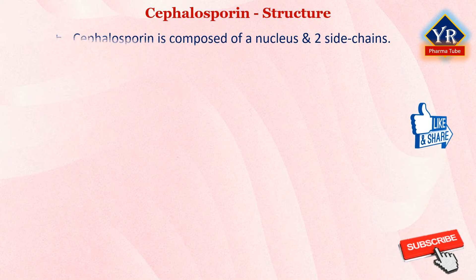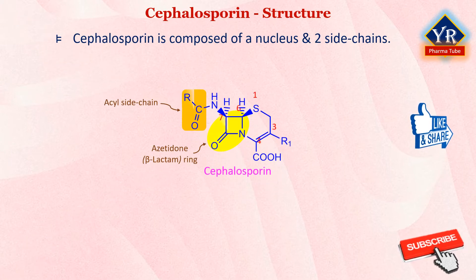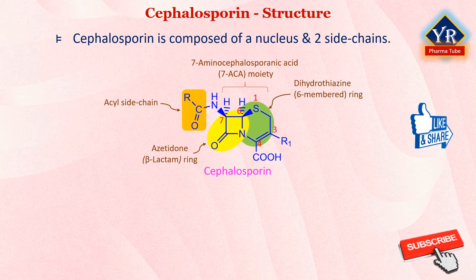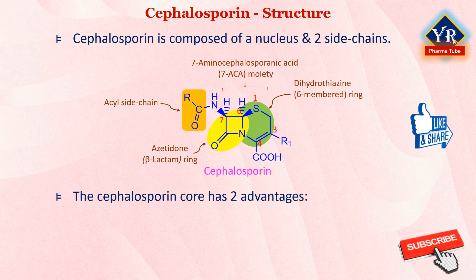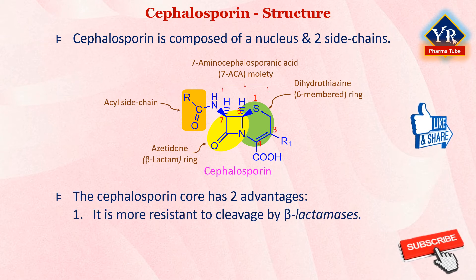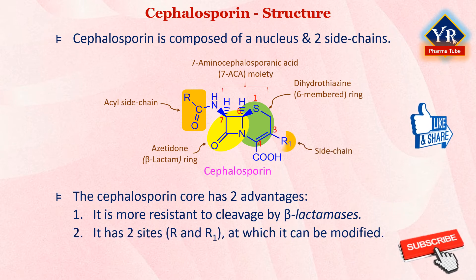Cephalosporin is composed of a nucleus with two side chains. The nucleus is 7-aminocephalosporanic acid, which is similar to the nucleus of penicillin except that the beta-lactam ring is fused to a 6-membered dihydrothiazine ring instead of a 5-membered thiazolidine ring. The cephalosporin core has two major advantages over the penicillin core: it is intrinsically more resistant to cleavage by beta-lactamases, and it has two variable sites, substituents R1 and R2, at which it can be modified. This in part explains the large number of cephalosporins commercially available today. As a consequence of the bigger ring, cephalosporins should have less strain, less reactivity, and less potency compared with penicillins.